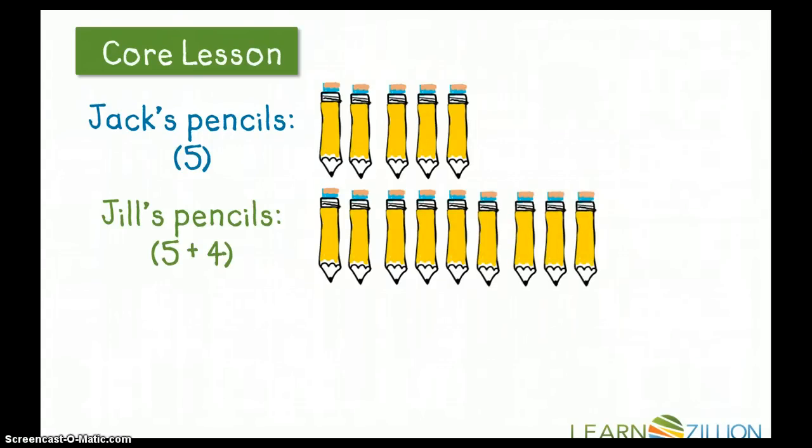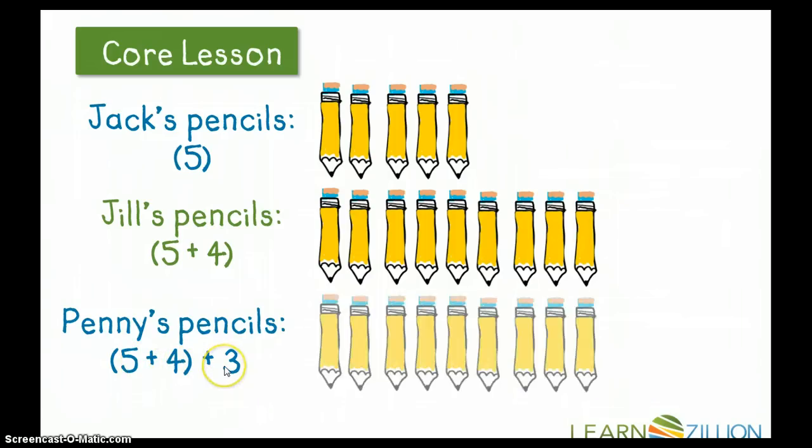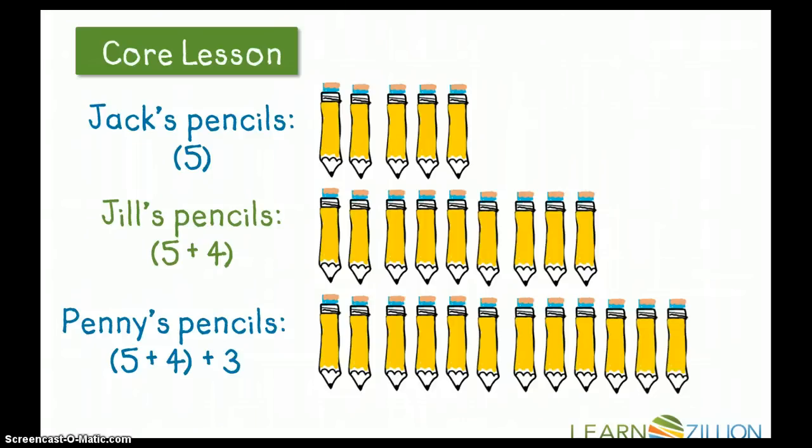Which gives me a total of nine pencils on Jill's desk. And then, the problem tells me how many pencils Penny has on her desk. And she has three more pencils than Jill has on her desk. And we know that Jill had five plus four pencils, or nine pencils. So Penny has three more. So there's the nine pencils. And then one, two, three more. So in all, Penny has 12 pencils on her desk.